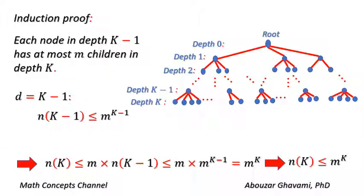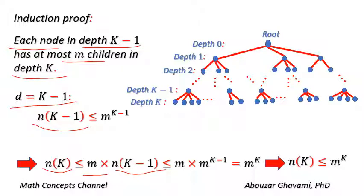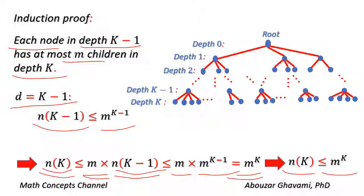Based on the definition of an M-ary tree, each node in depth K-1 has at most M children in depth K. Thus, N(K) is less than or equal to M times N(K-1). Using the induction assumption, N(K-1) is less than or equal to M to the power of K-1. Thus, M times N(K-1) is less than or equal to M times M to the power of K-1, which equals M to the power of K. Therefore, N(K) is less than or equal to M to the power of K. Using induction, we have proved that the capacity of depth K in an M-ary tree is M to the power of K.